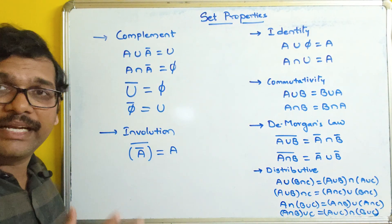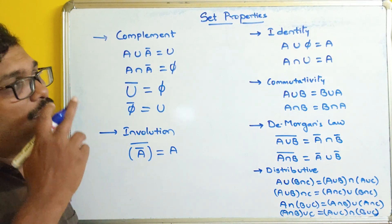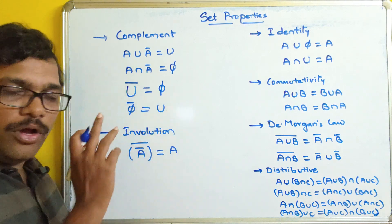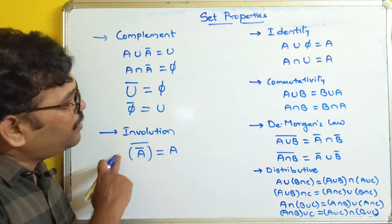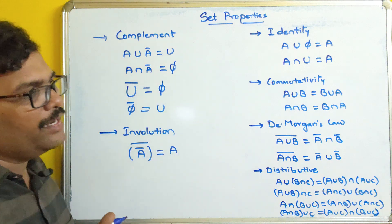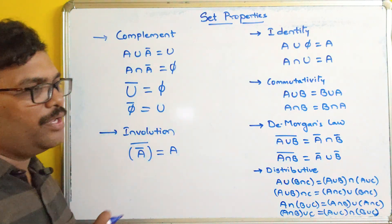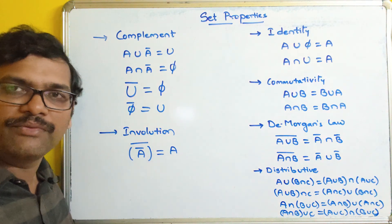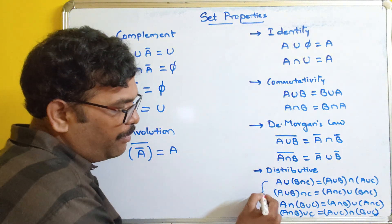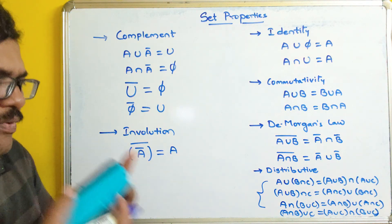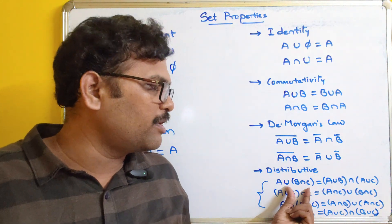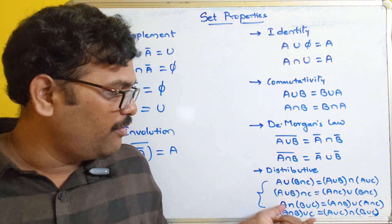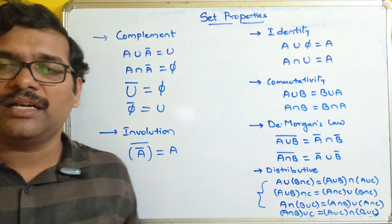So all the different set properties are: idempotence, domination, associativity, identity, commutativity, De Morgan's law, distributive law, complement, and involution. We need to remember these formulas so that in further sessions, if we need to replace a particular formula, we can apply the appropriate property — for example, applying De Morgan's law when needed.